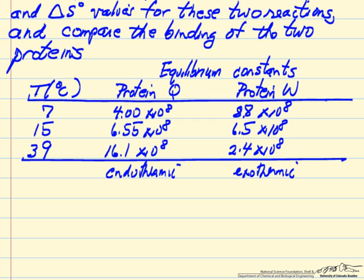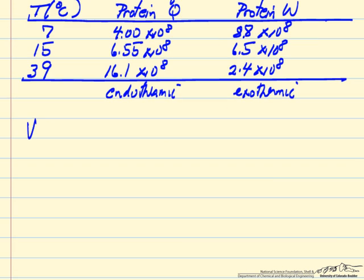So to calculate the heat of reaction, we use the Van't Hoff equation, and this equation assumes that the heat of reaction is a constant. Because this is a very narrow temperature range, it's actually a very good assumption.